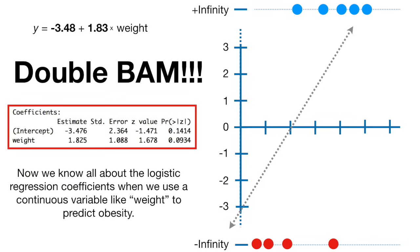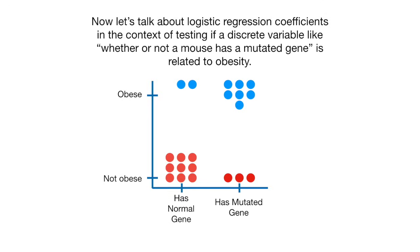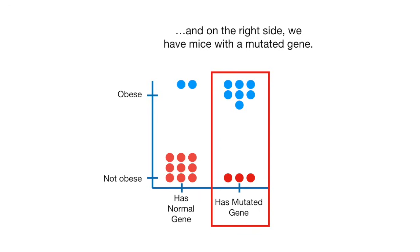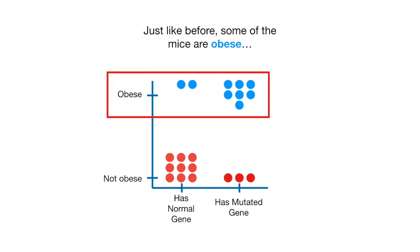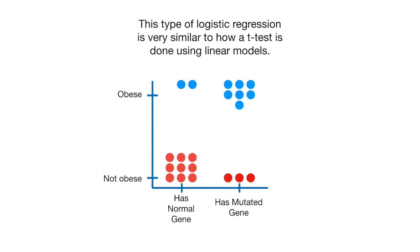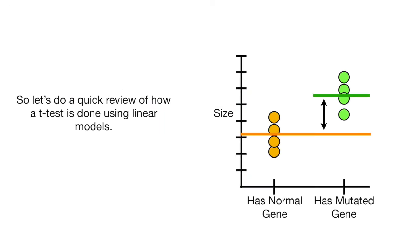Now we know all about the logistic regression coefficients when we use a continuous variable like weight to predict obesity. Now let's talk about logistic regression coefficients in the context of testing if a discrete variable — like whether or not a mouse has a mutated gene — is related to obesity. On the left side we have mice with a normal gene, and on the right side we have mice with a mutated gene. Some of the mice are obese and some are not. This type of logistic regression is very similar to how a t-test is done using linear models.